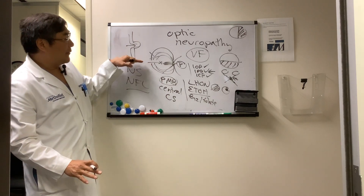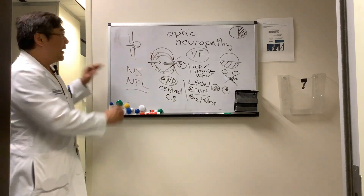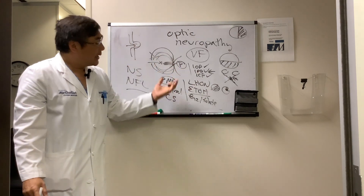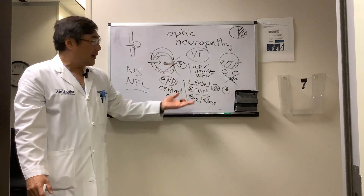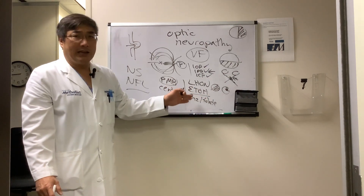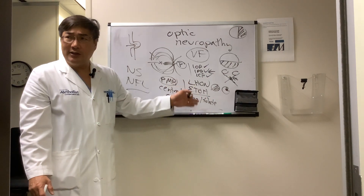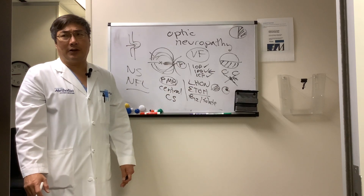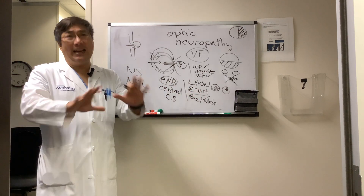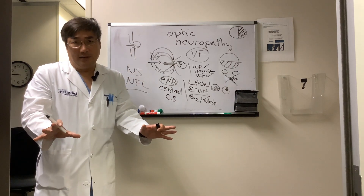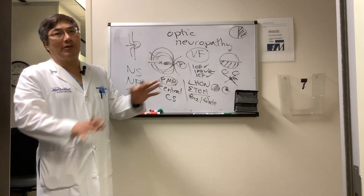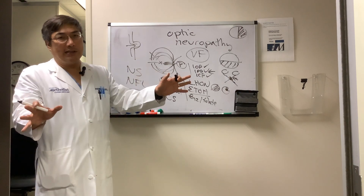Nerve fiber layer defects respect the horizontal meridian and are arcuate in shape from pressure-related phenomena, while papillomacular bundle defects produce central scotomas. If it's bilateral, you should be thinking nutritional, toxic, and Leber hereditary optic neuropathy. Otherwise, any optic neuropathy can produce any field defect. But you can somewhat use the field to try and branch between central and peripheral involvement.